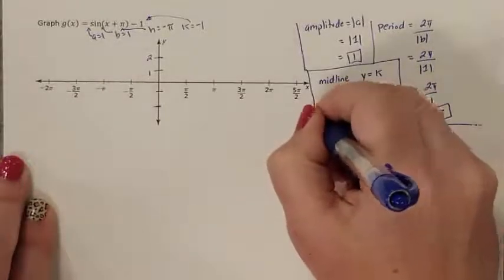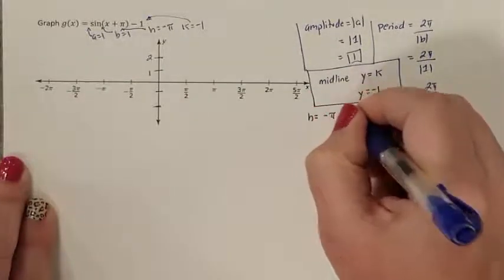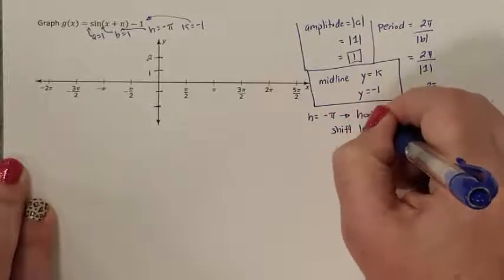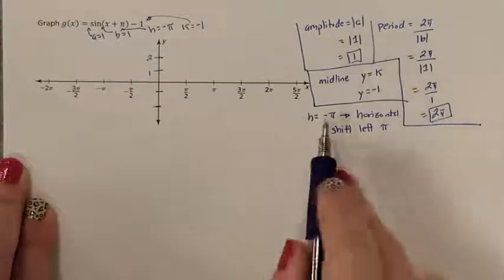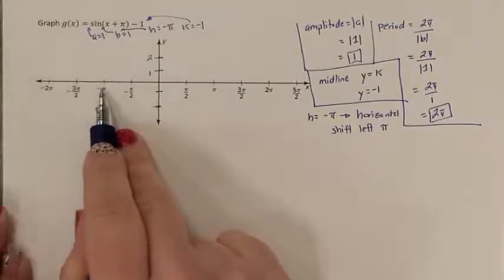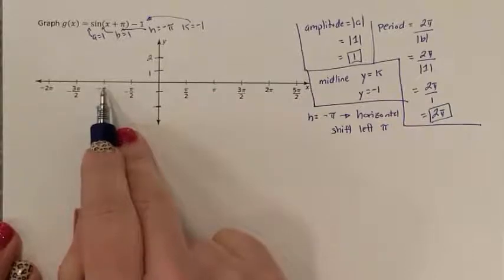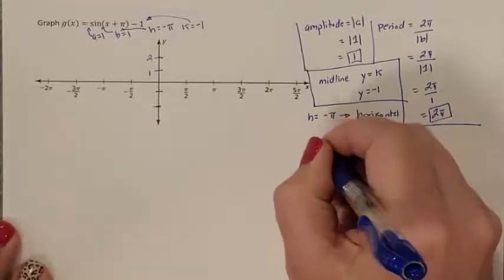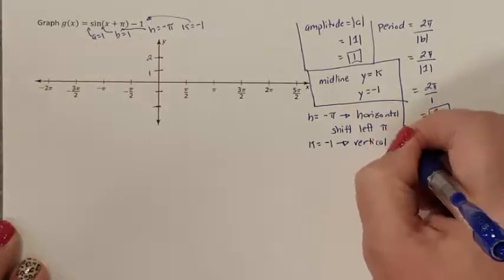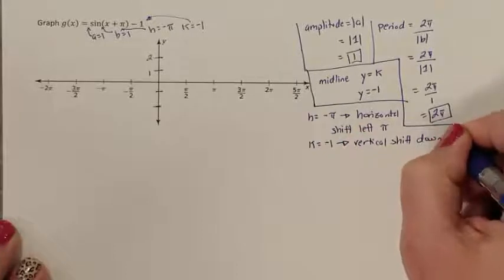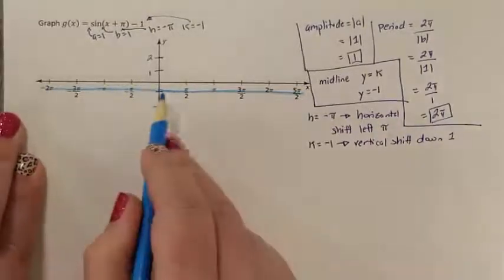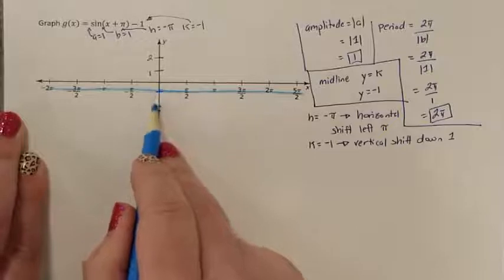My h is negative pi. H is your horizontal shift, and my horizontal shift goes to the left by pi — a negative h means a left move. So I don't start at 0; I actually start at negative pi. From there, I can repeat an entire 2 pi period. My k is negative 1, which means I have a vertical shift down 1, so my new midline is at y = negative 1. From there I can go up 1 and down 1 to reach my amplitudes.